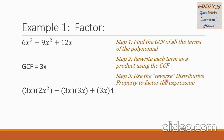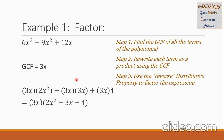For step 3, use the reverse distributive property to factor the expression. We are going to remove the GCF from the three terms, so the GCF is now outside. On the second factor, we collect all terms that remain for each term after removing the GCF. After removing the GCF, the 2x squared remains from the first term, so it is written as 2x squared.